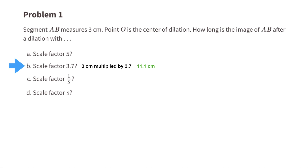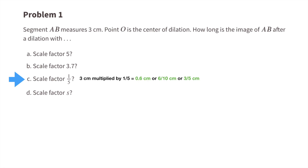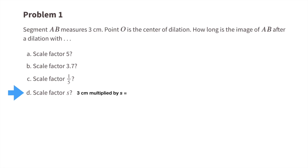Part c: a scale factor of 1 fifth. 3 centimeters multiplied by 1/5 equals 6 tenths of a centimeter, or 3 fifths of a centimeter — these are equivalent. Part d: a scale factor of s. 3 centimeters multiplied by s equals 3s centimeters.